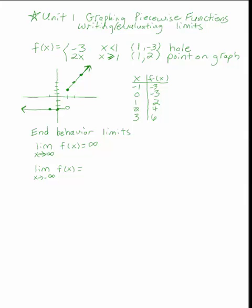On the right side of the graph, as x goes up, y goes up because the graph is increasing with no upper bound or asymptote, so the y values approach infinity. For x going to negative infinity, we move to the left side of the graph. As x goes from negative 10 to negative 100 to negative 1,000, the y value stays a constant negative 3. Remember, the answer to a limit is always a y value, so the limit as x goes to negative infinity is negative 3.